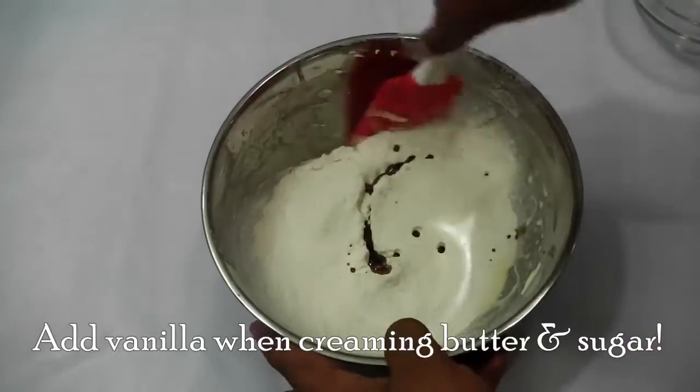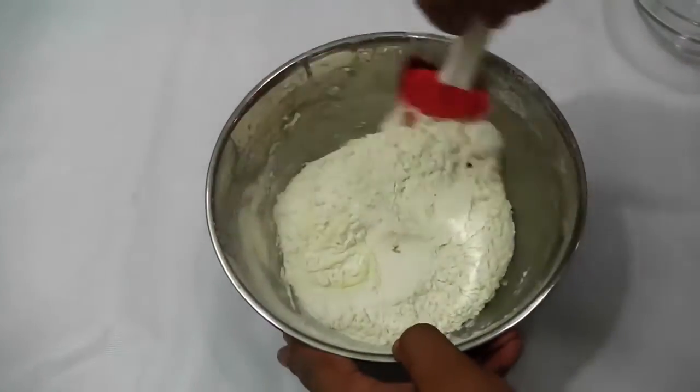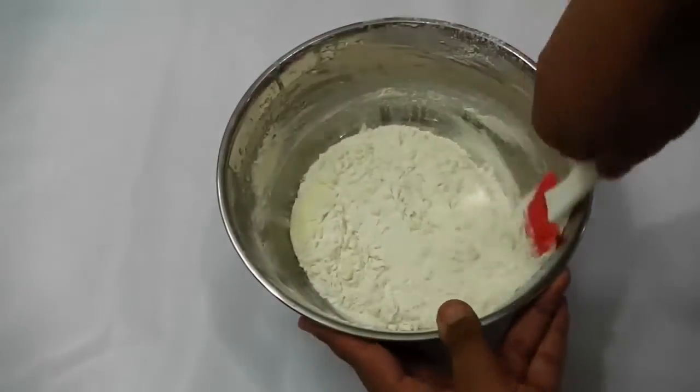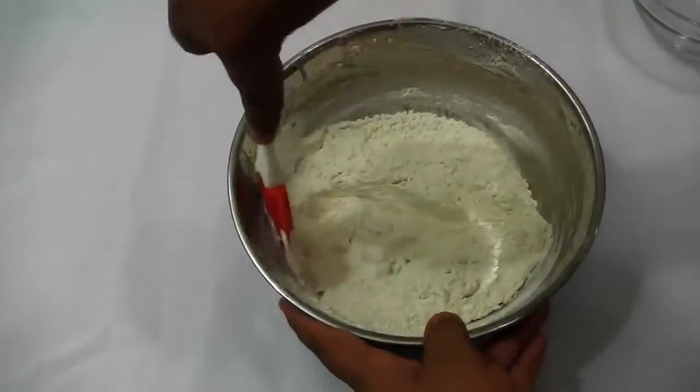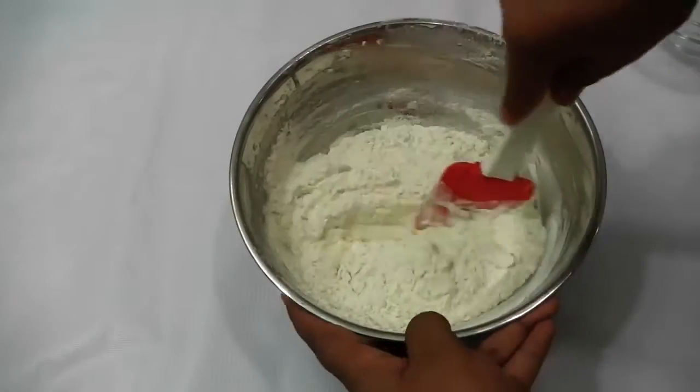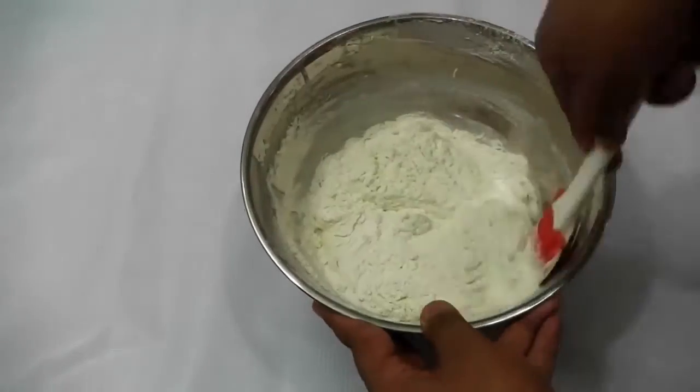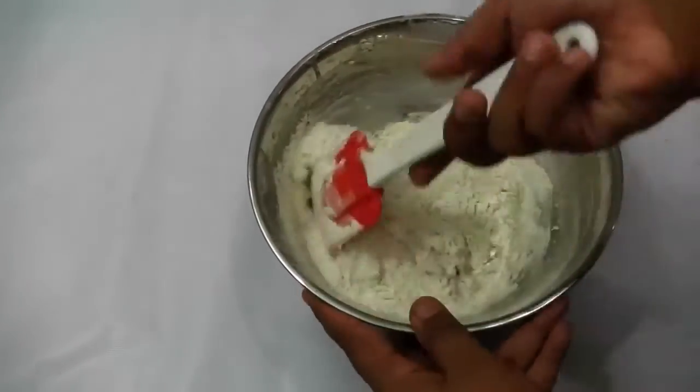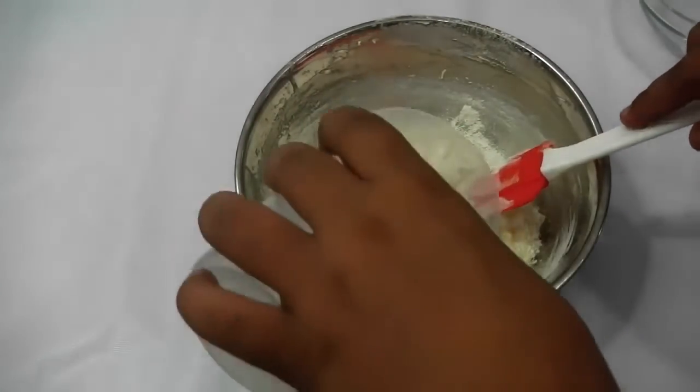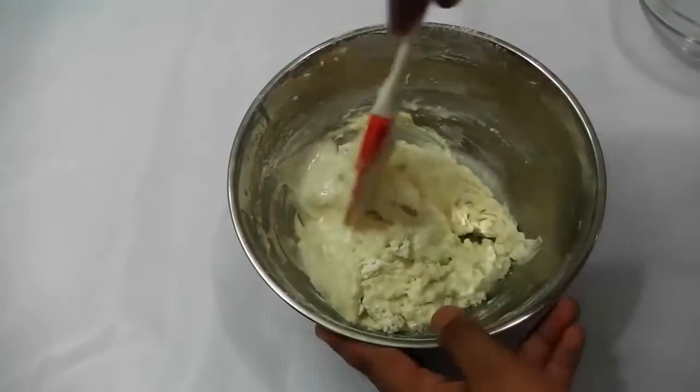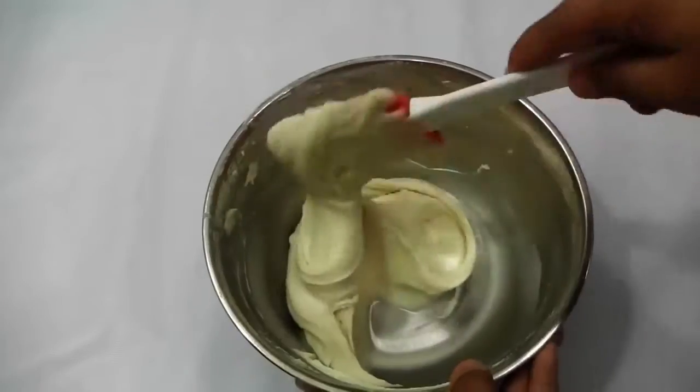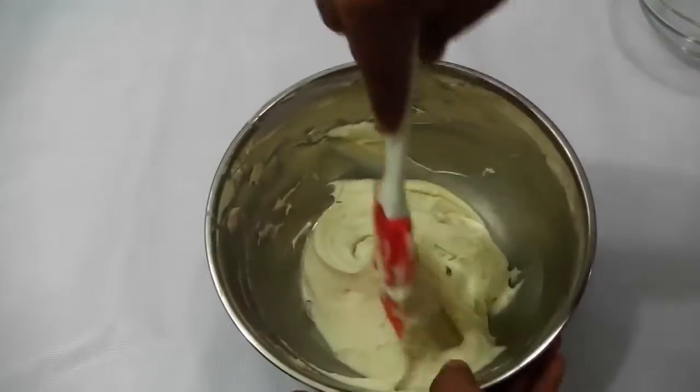And fold this dry ingredients to it. Folding basically means taking your spatula or spoon and moving your spatula like this and doing like this. This ensures the air and the fluffiness that we attained from butter and sugar does not go away, and we get a light and spongy cake. Now I'm going to add 50 ml of water to it—you can also use milk if you wish—and fold this together. Look at our cake batter, this is looking so nice and fluffy and good.